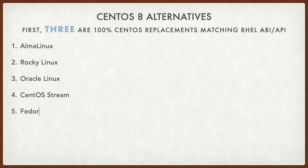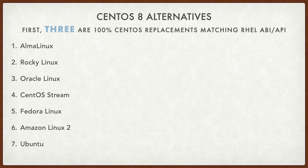Then we have other distros like CentOS Stream, Fedora Linux, Amazon Linux 2, Ubuntu, and others. And if you want, you can switch to FreeBSD too.